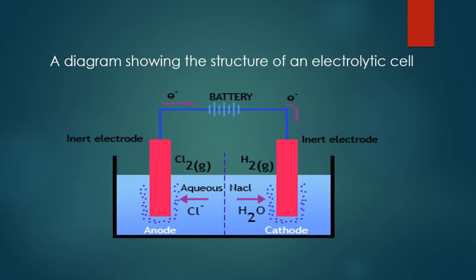There must be a battery for the reaction to proceed. At the anode, Cl⁻ ions lose electrons so chlorine gas can be obtained. And at the cathode, H⁺ ions gain electrons so hydrogen molecules can be formed.